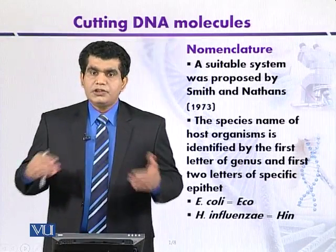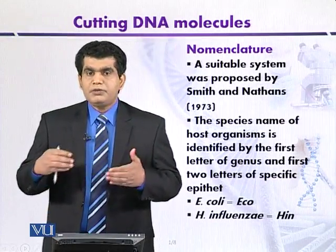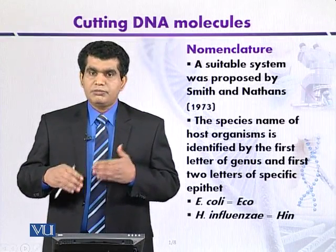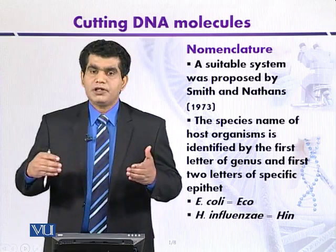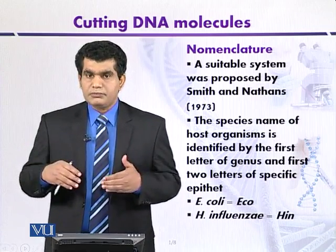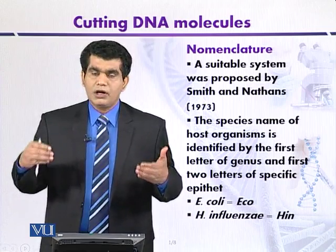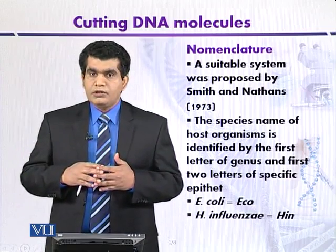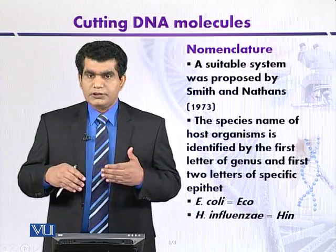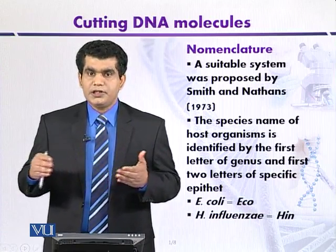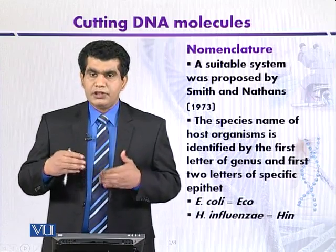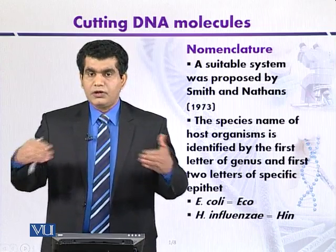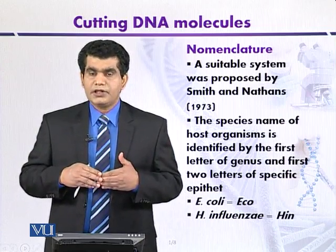After the discovery of a large number of type 2 restriction endonucleases, scientists proposed that there must be some sort of naming mechanism — a nomenclature of restriction endonucleases. One of the first proposals was given by Smith and Nathans in 1973. We are now going to discuss the key features of this nomenclature of restriction enzymes.